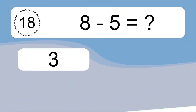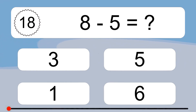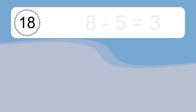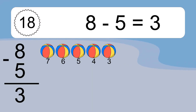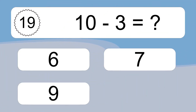8 minus 5 equals what? 8 minus 5 equals 3. Let's count it: 7, 6, 5, 4, 3.